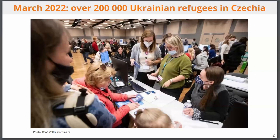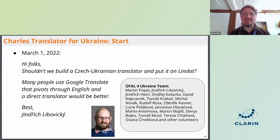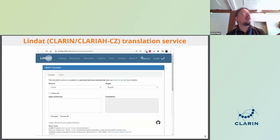For the first week we were just frustrated, watching the news. Then on March 1st, a colleague of mine, Zdeněk Žabokrtský from Charles University, wrote an email to a group of researchers in machine translation and natural language processing, asking whether we shouldn't build a Czech-Ukrainian translator and put it on LINDAT CLARIN infrastructure — with the motivation that direct translation should be better. In the end there was a team with many volunteers, mostly from the Institute of Formal and Applied Linguistics at Charles University but also from outside, and I became the head of the team.